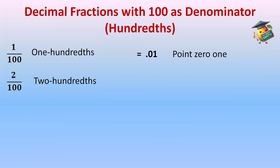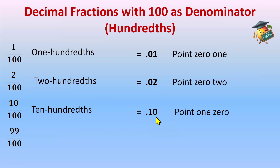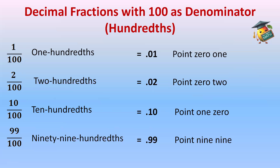2 by 100 — in decimal form we write it as 0.02. Next is 10 by 100, and in decimal form we write it as 0.10. We won't call it just 10 because after the decimal point we call the digits separately — it's 0.10. Next, 99 by 100 — we can also name it as 99 hundredths, and in decimal form we say 0.99. After the decimal point we separate the digits, so it's 0.99.